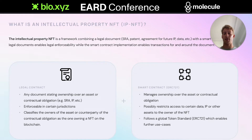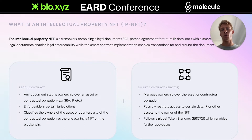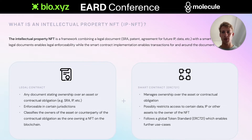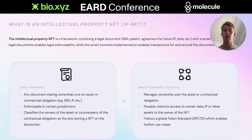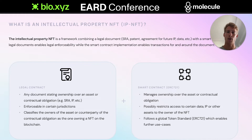The two things we look at are the legal contract and the smart contract. The legal contract is really important because we want our IP NFT to be enforceable in certain jurisdictions. The smart contract is important because we want to manage the ownership of a certain asset — the legal contract, data asset, or patent — via the blockchain. This is interesting because if we can manage it via the blockchain, we take a lot of transaction costs out of the equation.